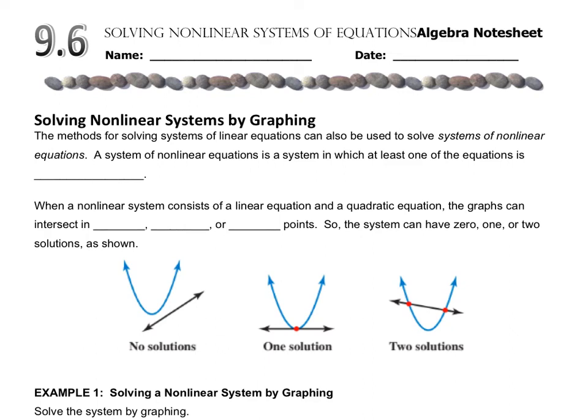In an earlier chapter, we looked at systems of equations where we intersected two lines. We looked at graphing, substitution, and elimination. Now in theory, you can do that for any two graphs. It doesn't have to be lines. So that's what we're going to look at in this lesson. We're going to look at solving nonlinear systems by graphing, and obviously then this means that at least one of them is nonlinear.